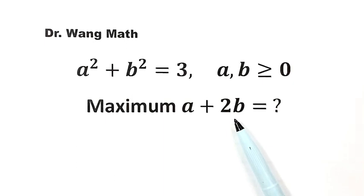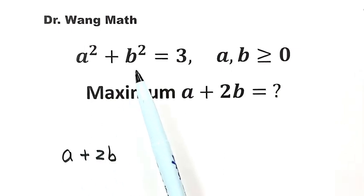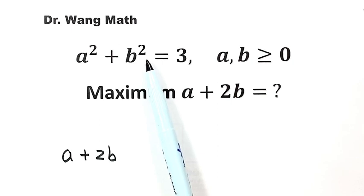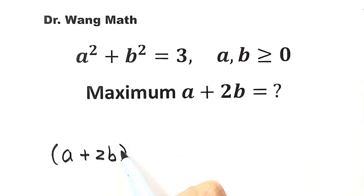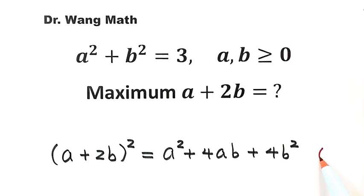How do we solve this? We start with the expression a plus 2b. To use the given condition, we need a squared and b squared, so let's square this expression and expand the product: a squared plus 4ab plus 4b squared. Let's label this Result 1.